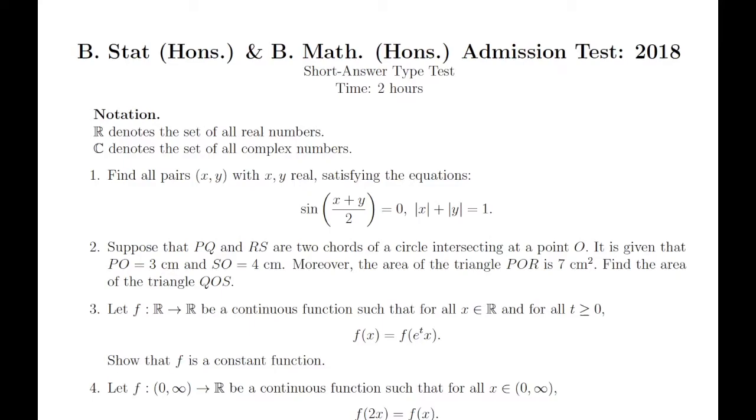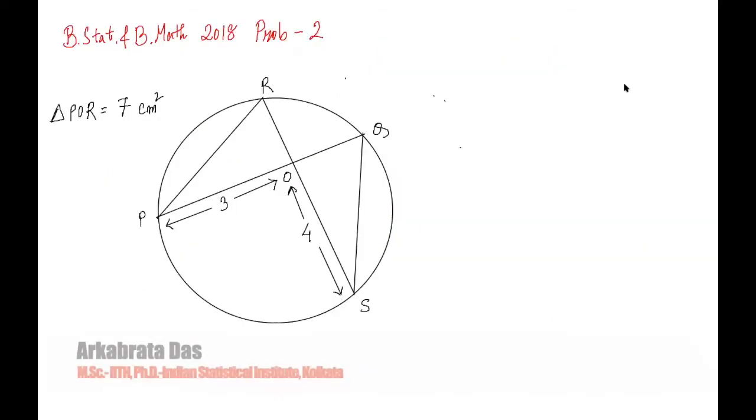You are also given the area of triangle POR, which is 7 cm². You have to find the area of triangle QOS. Here is the diagram: you have been given PO and SO, their length, and the area of triangle POR, which is 7 cm².